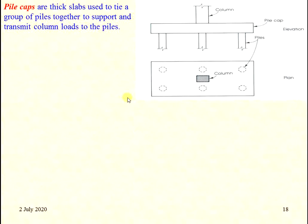Pile caps are thick slab structures used to tie a group of piles together to support and transmit column loads to the piles. The pile cap takes the load from the column and equally distributes it to the piles, which in turn distribute the load to the soil or rock bed.